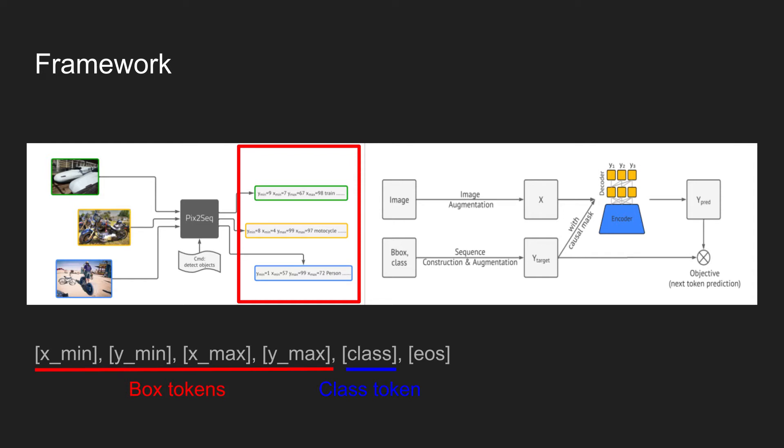As we can see in the figure, there's no complex architectures like Region Proposal Network or ROI Align. It just takes an image as input and predicts a sequence of tokens in an autoregressive manner.